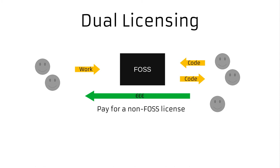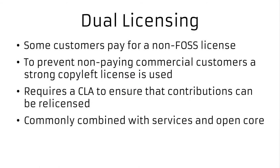Another model is dual licensing — basically there's a split in the community. You have a community of users, but you also have a few users who actually pay for getting the same product but without an open source license, so they can modify it, link statically to it, or they might be concerned about the license itself. The best way to get paying customers is to have a very strong copyleft license for the open source version, so it's hard to build a closed source product around it.